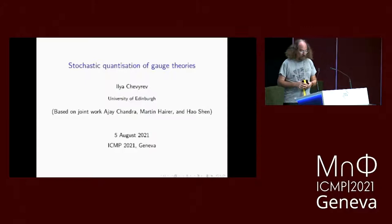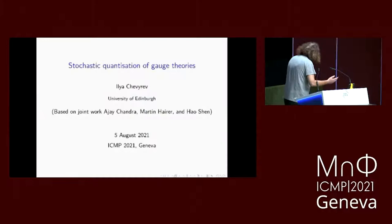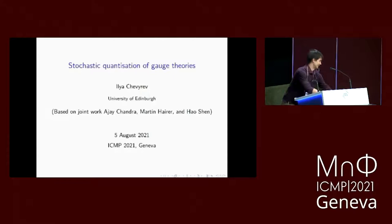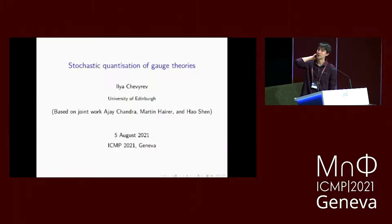Ilya Shevrev will talk to us about stochastic quantization of gauge theory, and I'm happy to offer him a medal which the Congress is offering to all the invited speakers. Thank you very much for the kind invitation. It's a pleasure to speak here. I want to speak about two papers that are joint work with A.J. Chandra and Martin Hairer, who are at Imperial College London, and with Hao Shen, who's at the University of Wisconsin-Madison.